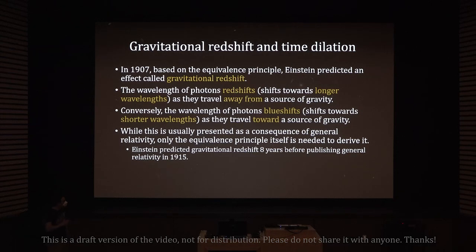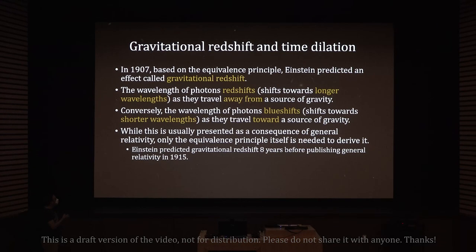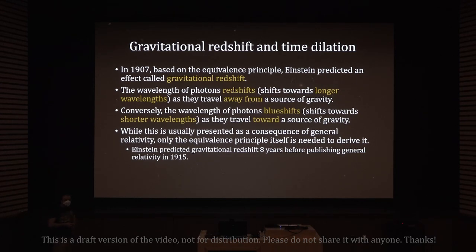While this is usually presented as a consequence of general relativity, in fact only the equivalence principle itself is needed to derive it. Einstein predicted gravitational redshift in 1907, which was eight years before publishing general relativity in 1915. Even without the full theory, just with the equivalence principle, it's already enough to derive this effect.